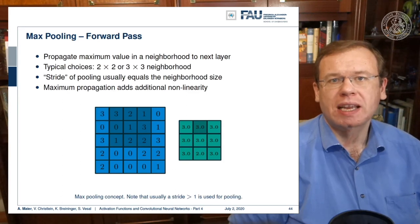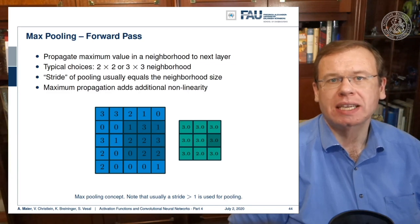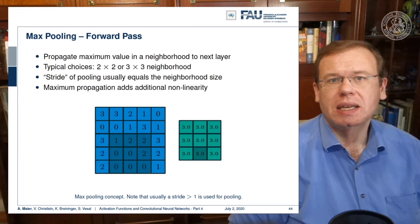Here you see a pooling layer of three by three and we choose max pooling. So in max pooling only the highest number of a receptive field will actually be propagated into the output. Obviously we can also work with larger strides. Typically the stride equals the neighborhood size such that we can get one output per receptive field.